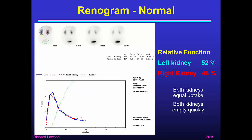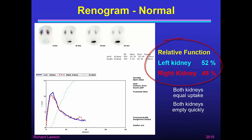We can see that during the first three minutes the left and right kidney curves rise equally quickly, showing that the uptake in each kidney is equally good. The computer calculates that the left kidney has 52% of the total function and the right 48%, showing that essentially both kidneys have equal uptake. After about four minutes the curves start coming down again, and both kidneys empty equally quickly. This display embodies all the information needed to interpret the Rhenogram, and this is the sort of display we're aiming to produce in this talk.